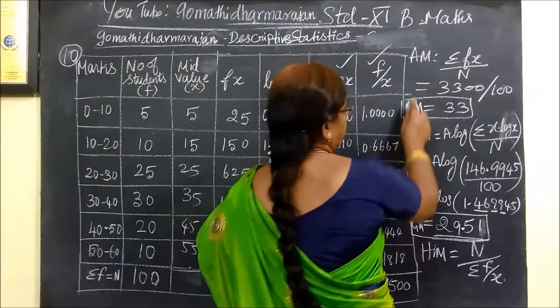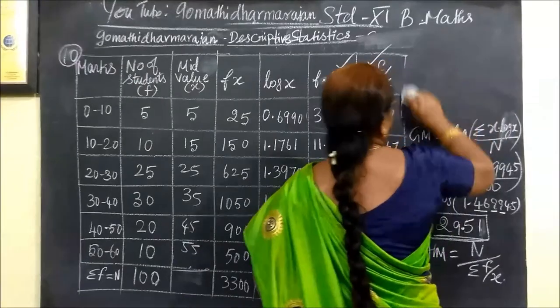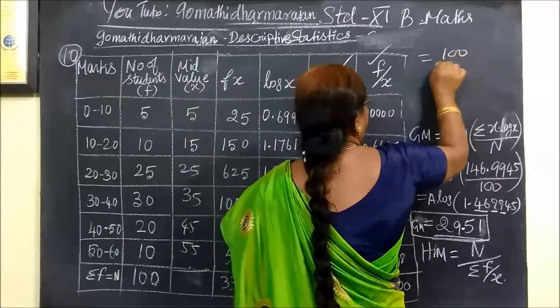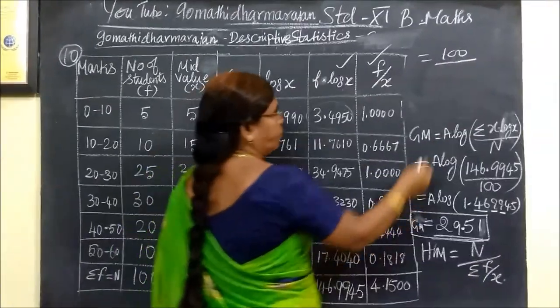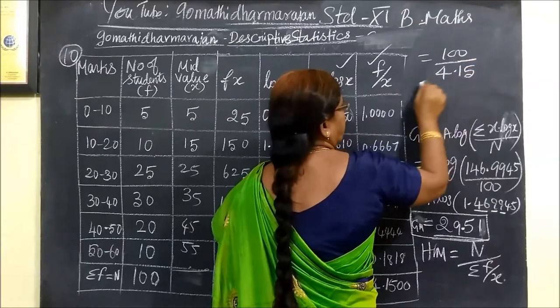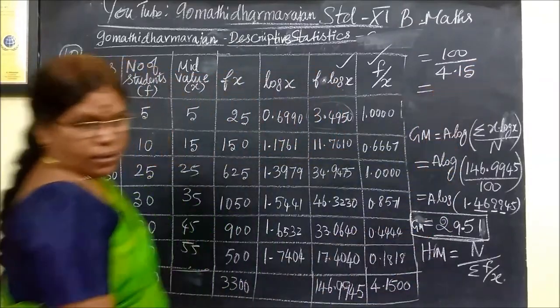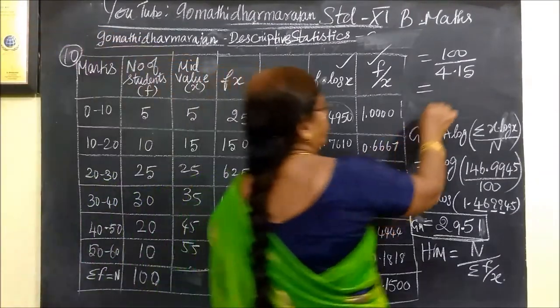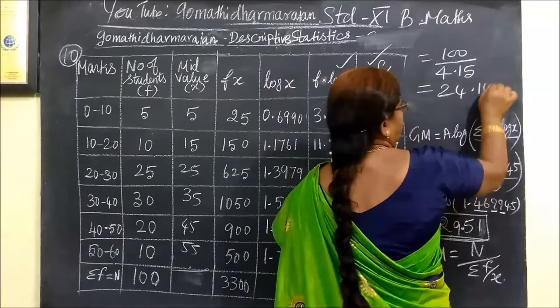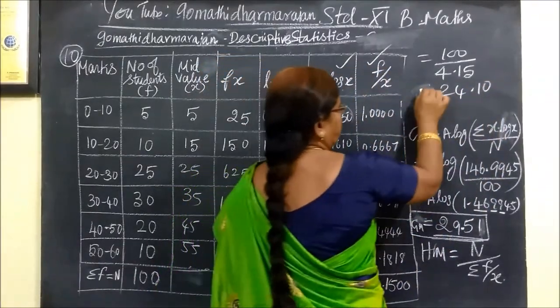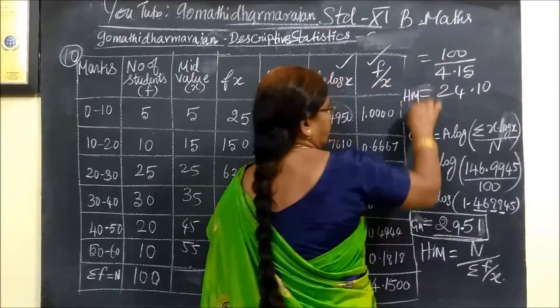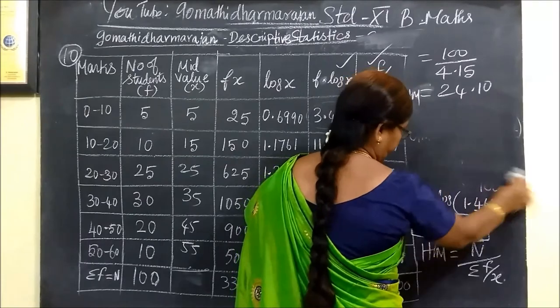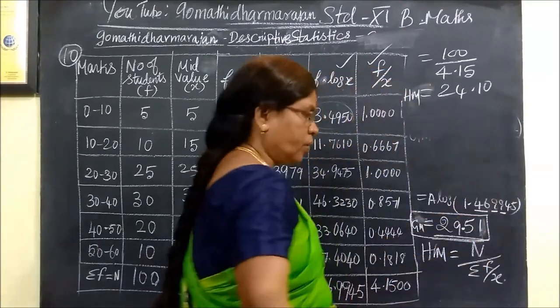Now for harmonic mean. N divided by Sigma f by x. Capital N is 100 divided by 4.150. So 100 divided by 4.15 equals 24.10. That was the harmonic mean calculation.